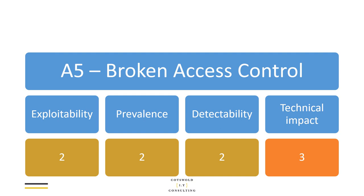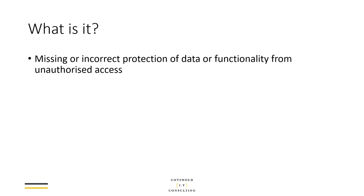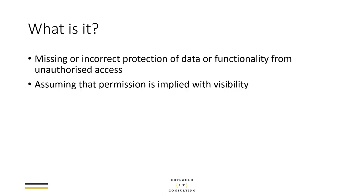In terms of what we're talking about with broken access control, quite simply we're saying that the protection of data or functionality from unauthorized access is either missing or incorrectly set up — either set up wrong, or maybe only partially set up, so perhaps it only catches some attack vectors and not others. Where the protection of data or functionality from unauthorized access is broken, that's really what this whole video is talking about.